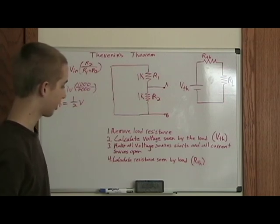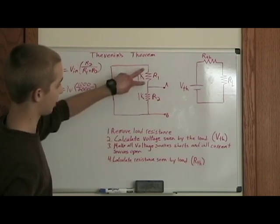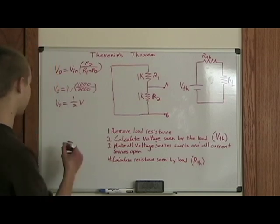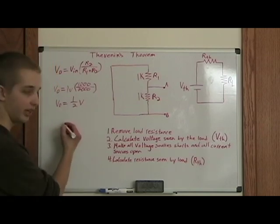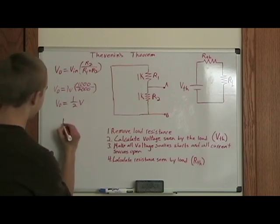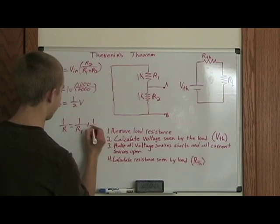So once you replace it with a short, the next step is to calculate the resistance seen by the load. So when this is replaced with a short, you can see that R1 and R2 are just in parallel. So then it becomes really easy to calculate it because we know that the equation for finding resistance of resistors in parallel is 1 over R equals 1 over R1 plus 1 over R2.